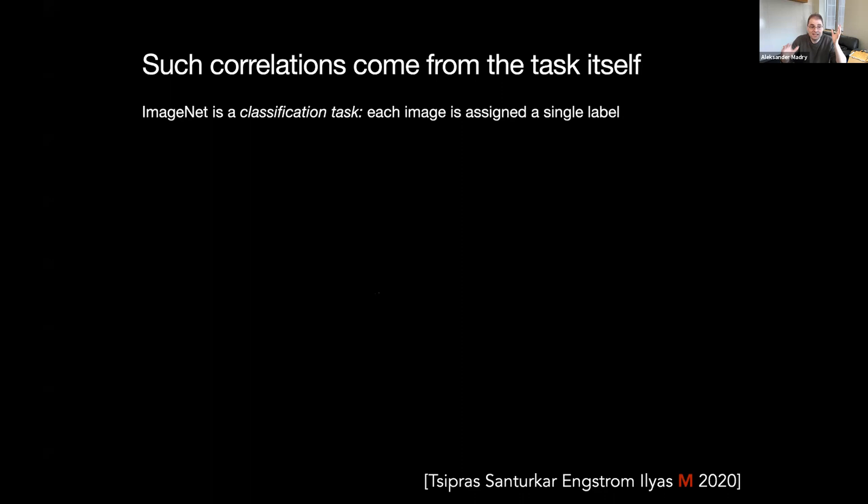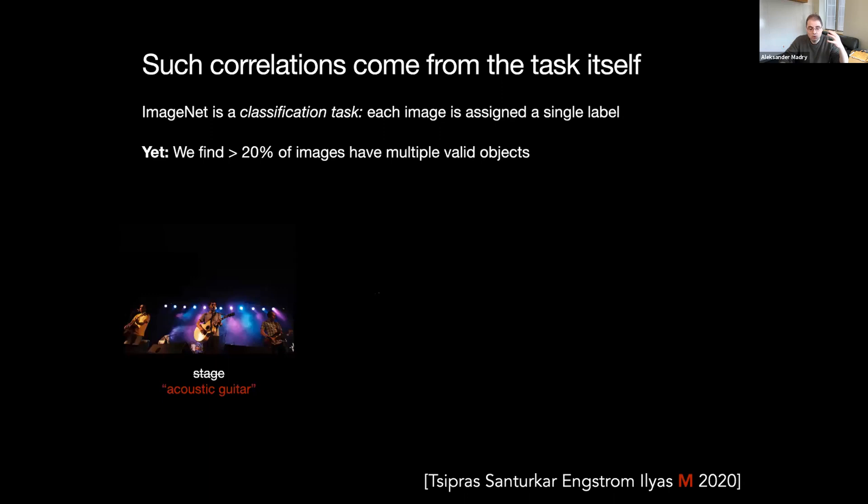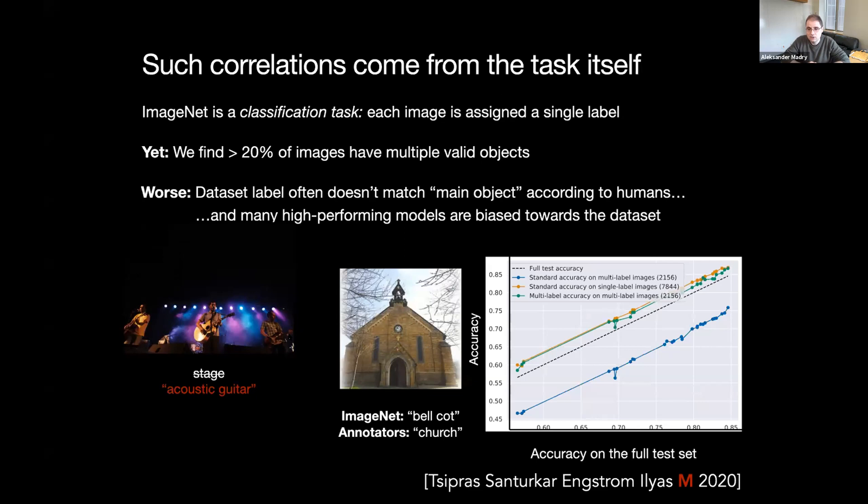But also this correlation can come from the task itself. In particular, ImageNet has this notion that it's a classification task. It has this notion that each image has an assigned single ground truth label. But what we found when we looked into it is actually at least more than 20% of images we looked at had multiple valid objects. So here's an example: this is something that to us probably would be a stage, but actually ImageNet claims it's an acoustic guitar, because indeed, there's also an acoustic guitar here. And it's not only that there are these multi-object images that we expect only one correct answer there. But sometimes the correct answer is actually not the answer that you as a human would assign here. So this is an example in which if I asked you what's in this picture, you would say church, but actually ImageNet claims it's the bell cote. And the reason is that the way this image came up is when the data creators asked Flickr for images of the bell cote. And again, there are some biases that come from that. And it's not only that these labels are wrong, it's that our models believe that these labels are right. And that's how they learn to recognize the object and solve the task.